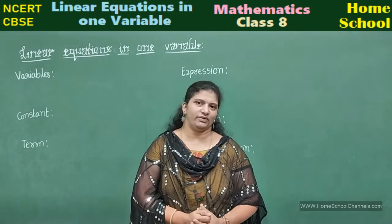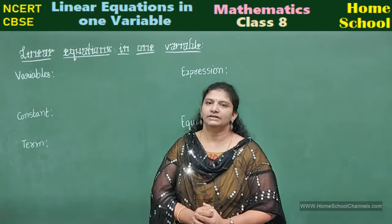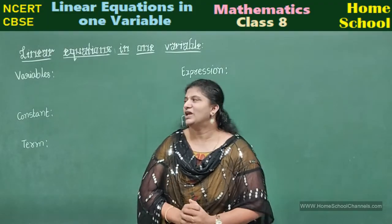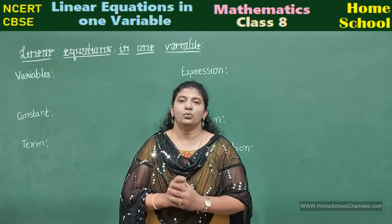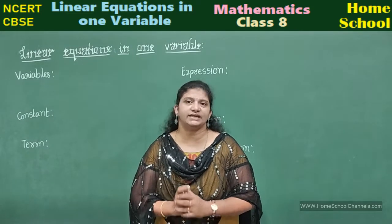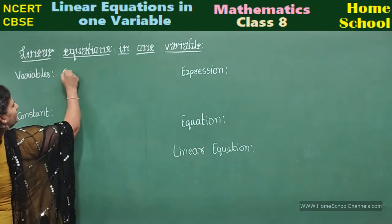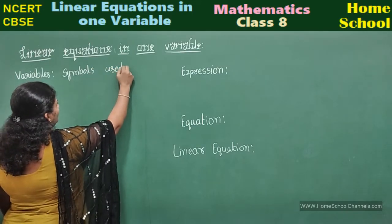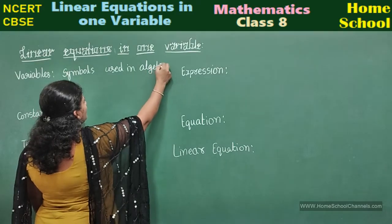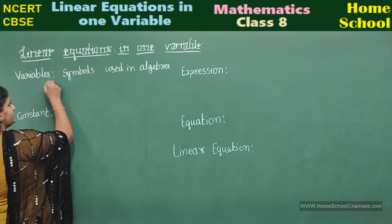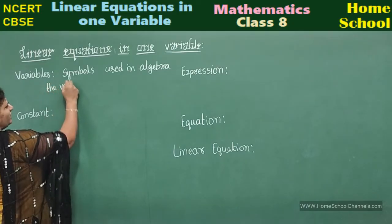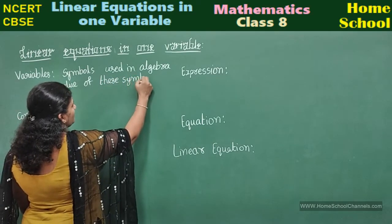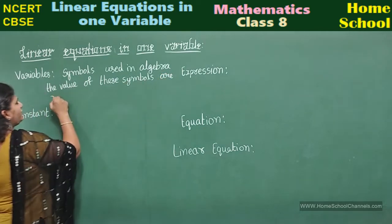Before knowing about an equation, we just go through variables, constant, term, what is the expression, and what is an equation — then we come to linear equation in one variable. Variables are the symbols used in algebra, and the value of these symbols is not fixed.